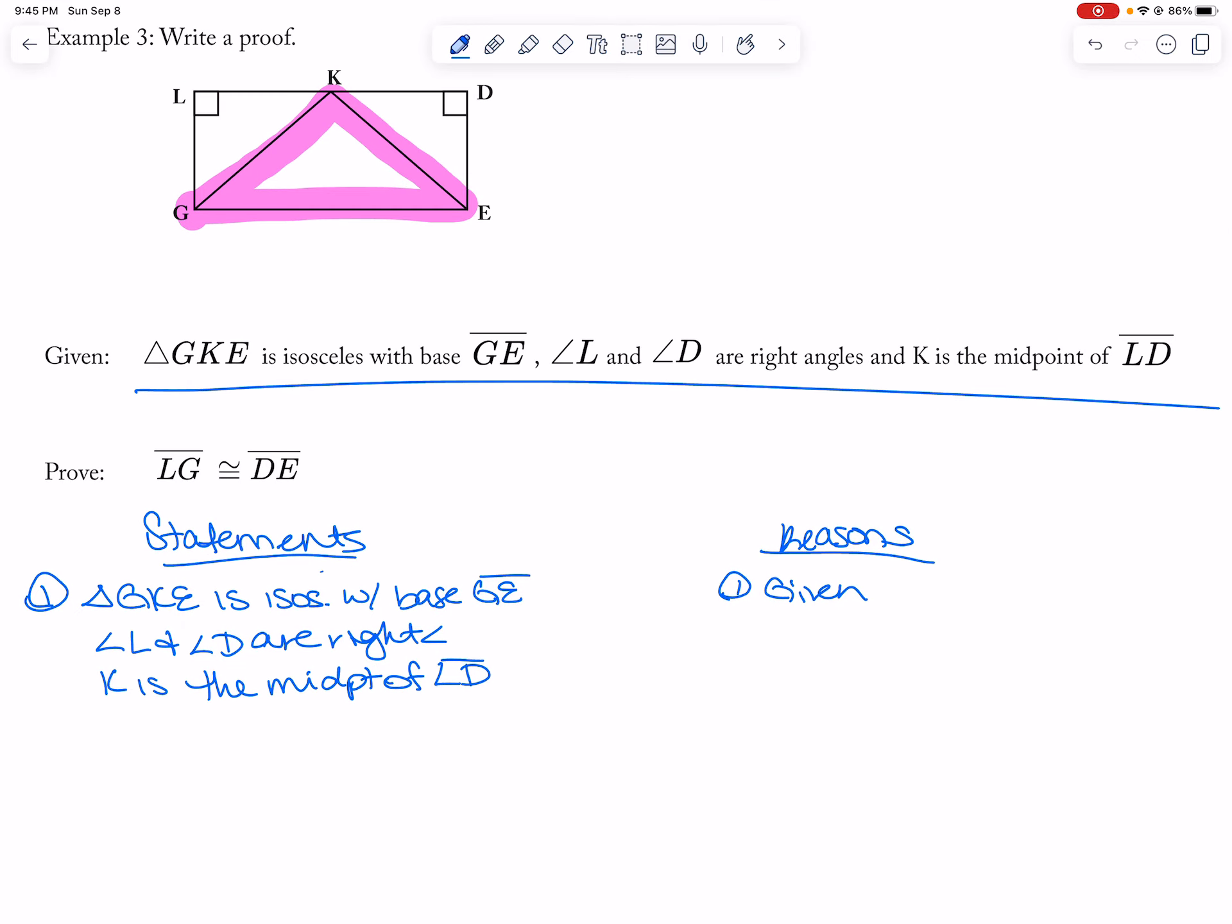Like I could say, okay, so let's see. KG and KE are congruent. This is definition of isosceles triangle.